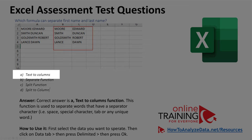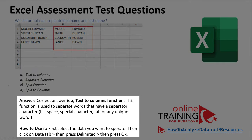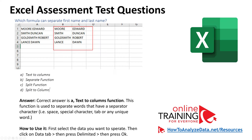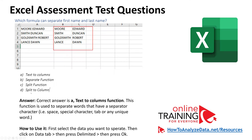The Text to Columns function is used to separate words that have a separator character — for example, space, special character, tab, or any unique word. Keep in mind that even though we call it a function, it is actually a functionality, not a formula. Other choices — separate function, split function, and split to column — do not exist in Excel.